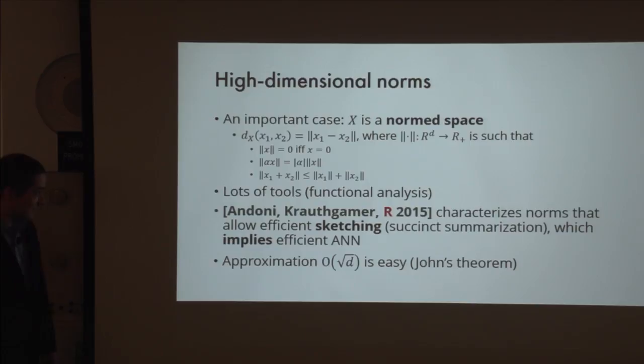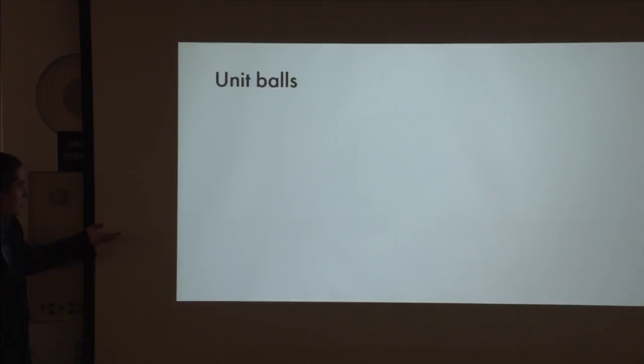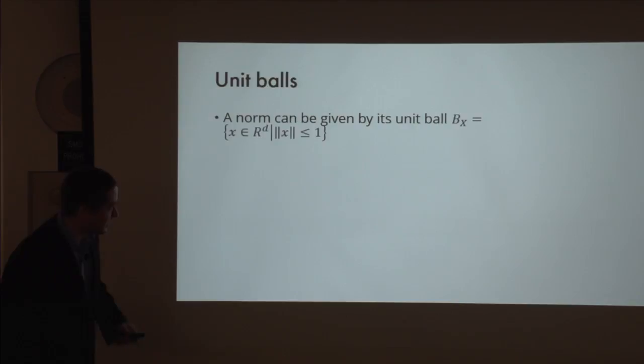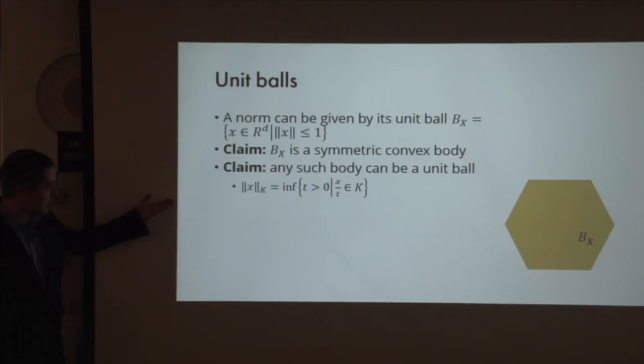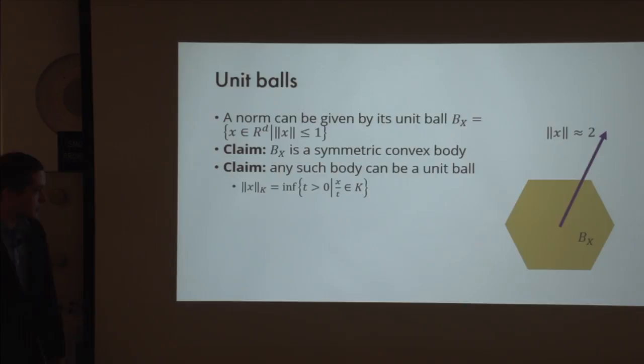Another way to think about norms is via their unit balls. A unit ball is a set of vectors with norm at most one. It's easy to see that it's a symmetric convex body. Conversely, if you have such a body, you can define a norm whose unit ball is that body—called the Minkowski functional of the body. For example, for a given body and vector, its norm is around two because the ball crosses it around the middle. This reformulates the question: what property of a convex body makes approximate nearest neighbor search tractable?